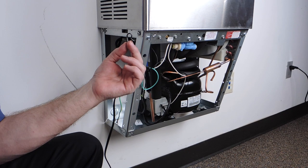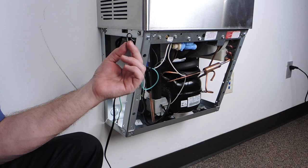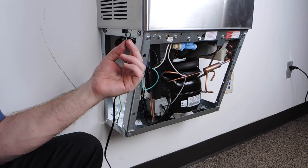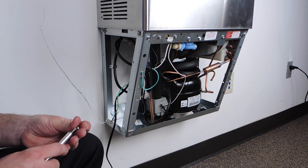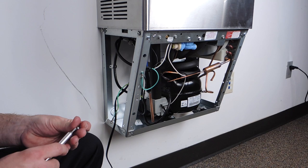Install the provided strain relief P-clip to the power cord roughly 36 inches from the grounded plug. This will prevent any strain onto the power cord. Use a number eight torque screw to attach the P-clip.